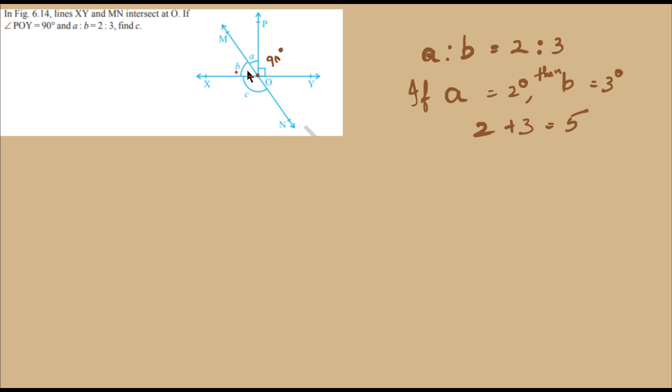In this problem, angle A plus angle B equals 90 degrees. Why? Because XY is a straight line, the angle around point O is 180 degrees, and we already have a 90 degree angle at POY. Therefore, angle POX is also 90 degrees, so A plus B equals 90 degrees.